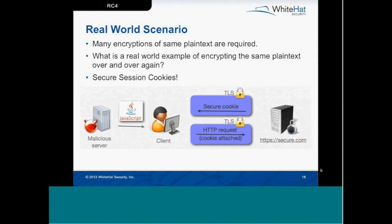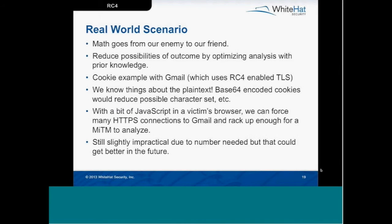This is unrealistic when it comes to the fully reliable 1 billion TLS requests scenario, but it gets more realistic with additional knowledge going into the attack. That's the worst case — knowing nothing, you need about a billion TLS handshakes. But if we know things about the encrypted text, we can reduce the time needed. For example, if you knew the cookie was base64 encoded — fairly common — that really reduces the character set to watch for in the plain text, which reduces the math and makes this attack slightly more practical.